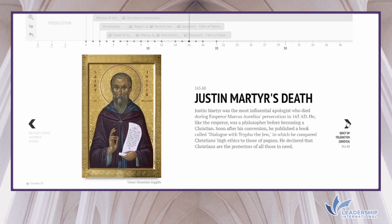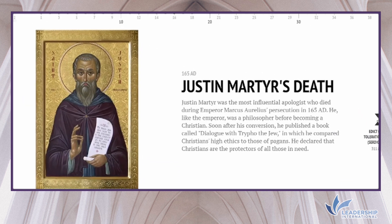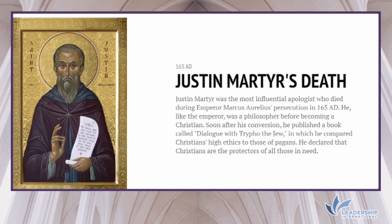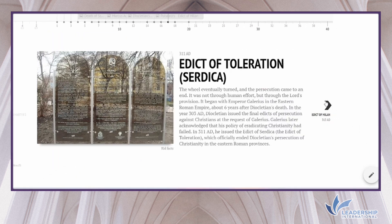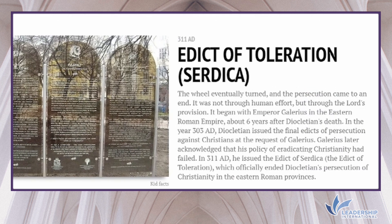Justin Martyr was the most influential apologist, dying during Emperor Marcus Aurelius' persecution in 165 AD. Like the emperor, he was a philosopher before becoming a Christian. Soon after his conversion he published Dialogue with Typho the Jew, in which he compared Christian high ethics to those of pagans, declaring that Christians are the protectors of all those in need. The wheel eventually turned and the persecution came to an end — not through human effort, but through the Lord's provision.